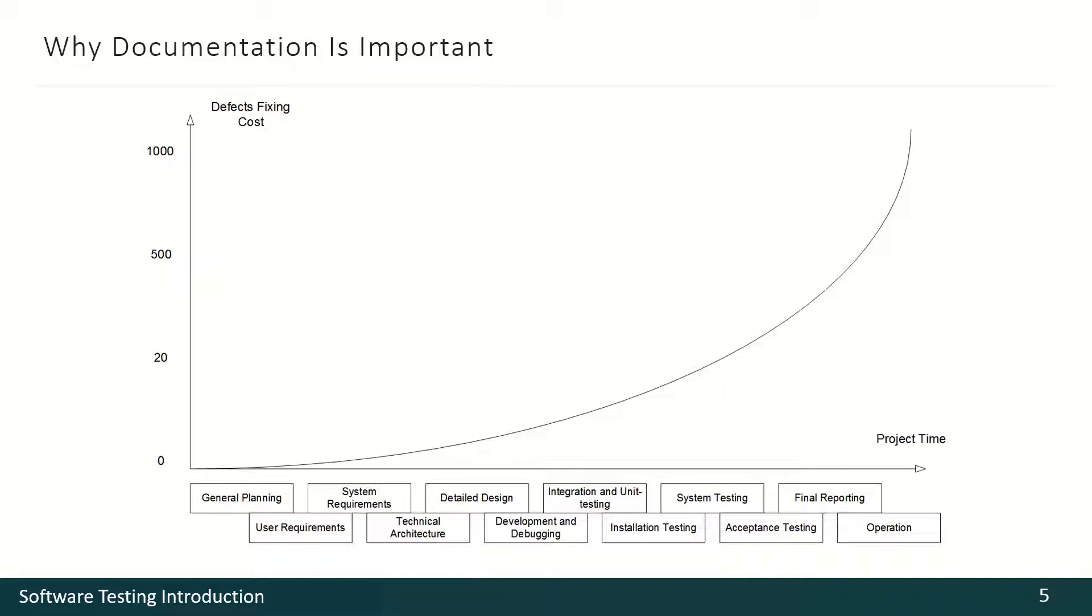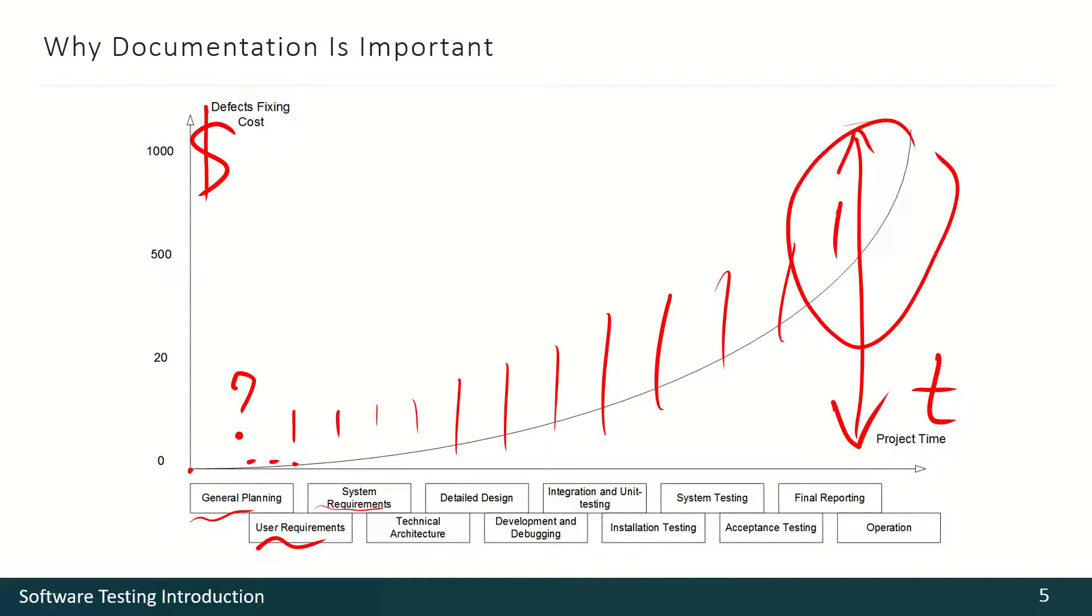And another picture illustrating the importance of documentation and requirements. Here we see the time and the money. How much does it cost at the beginning of the project when we are just planning or working with requirements? When we are just discussing something, speaking about something? How much does it cost to correct a mistake? Very, very few dollars. Okay, maybe not so few. But when we compare it to this figure, when someone made a mistake there, and then it developed and developed, here we may even need to start the project from the very beginning.